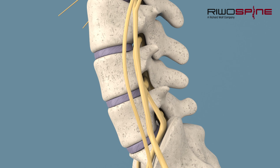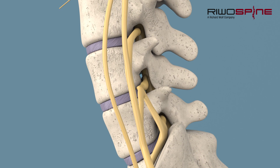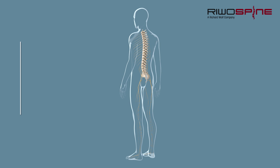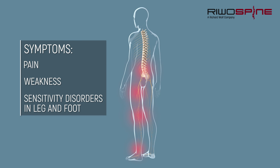One of the most frequent causes of leg and back symptoms is the herniated disc. High forces can cause the outer fibrous ring to rupture and the fibers and core material to exit into the spinal canal. Depending on the anatomical structures and location of the herniated disc, the symptoms can be very different. It is possible that disc tissue compresses important neural structures, causing pain, sensitivity disorders, and limited mobility.